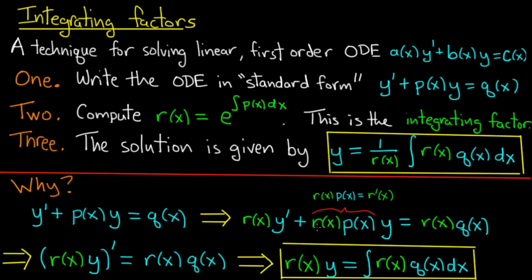The thing to notice here is that this product r(x) times p(x) is in fact the derivative of r. That is by the definition of the integrating factor—we cooked it up in such a way that its derivative by the chain rule would come out to be r(x) times p(x).